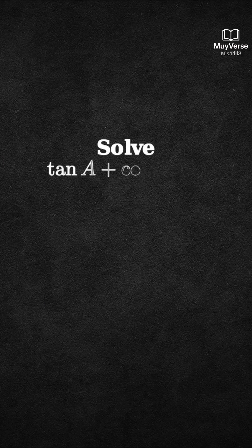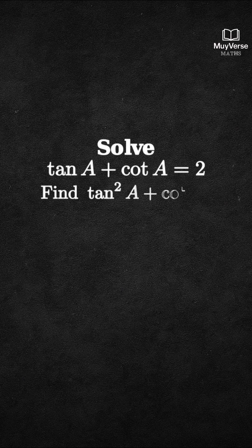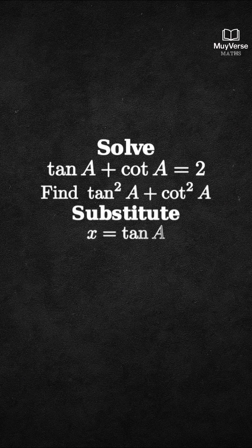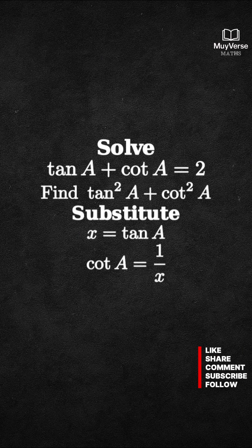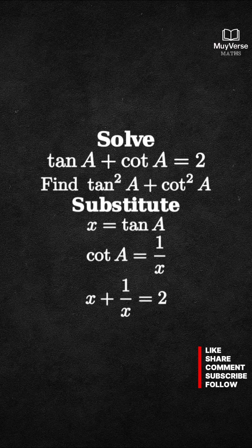We are given tan(A) + cot(A) = 2, and we need to find tan²(A) + cot²(A). Step 1: make it simple with a substitution. Let x = tan(A), so cot(A) = 1/x. Then the given equation becomes x + 1/x = 2.